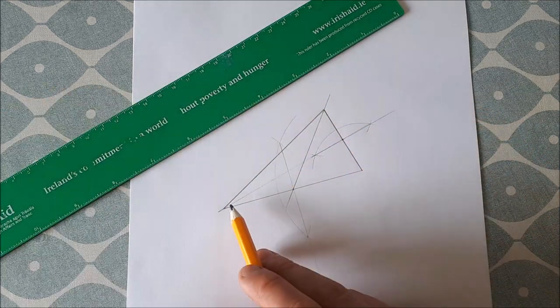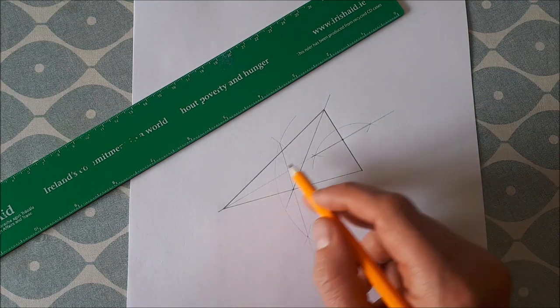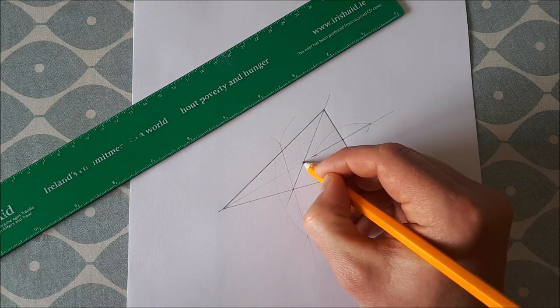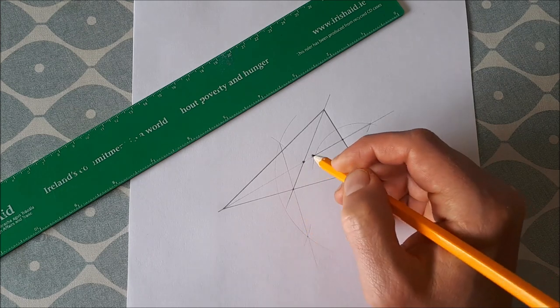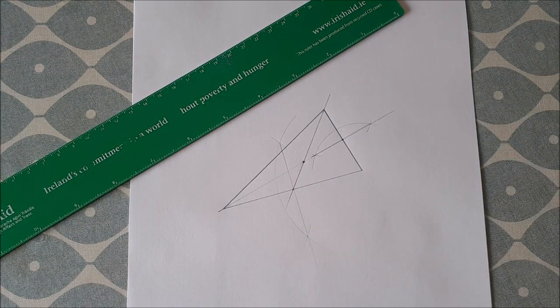And that's the median of this angle. Now where these two medians intersect, which is the point here, that is the centroid of our triangle.